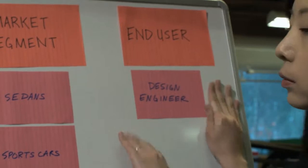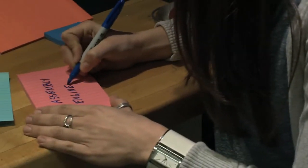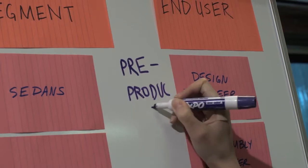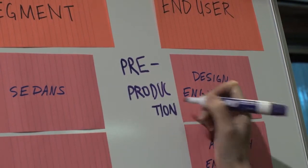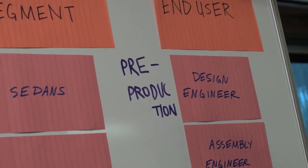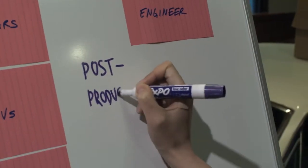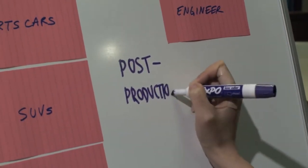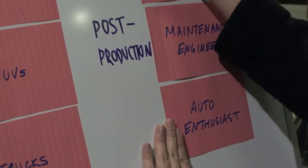So far, our student entrepreneurs identified two main categories of end users. Those in the pre-production stage, such as design engineers and assembly engineers, and those in the post-production stage, such as maintenance engineers and auto enthusiasts.